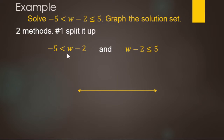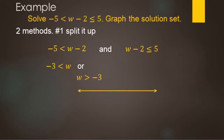Solving the left portion: we need to undo the minus 2 with a plus 2. Negative 5 plus 2 makes negative 3, so negative 3 is less than W. Generally we like seeing the variable first, so we switch it: W is greater than negative 3. Now for the right portion, we also add 2 to both sides: 5 plus 2 is 7. So we have W is greater than negative 3 and W is less than or equal to 7.